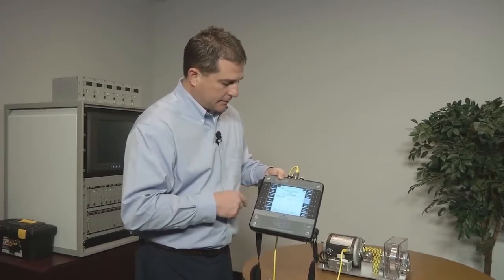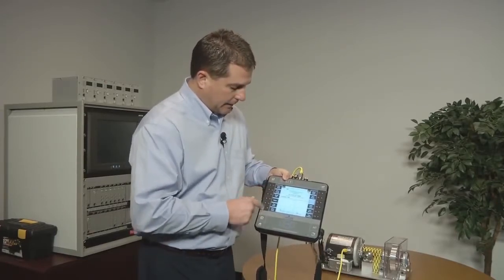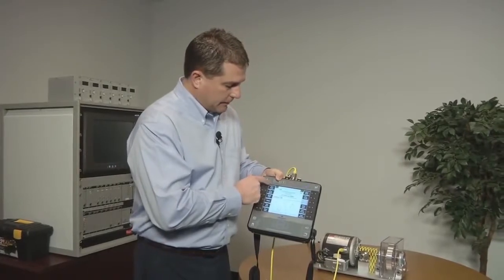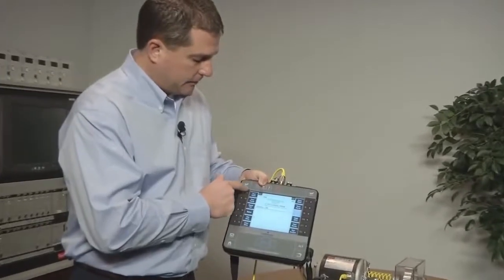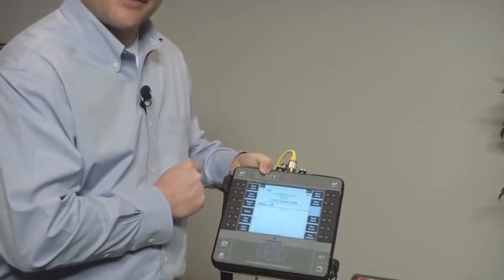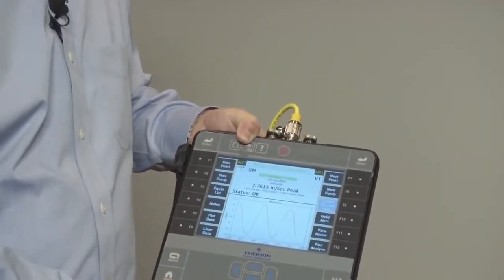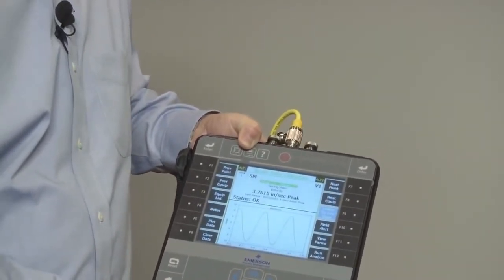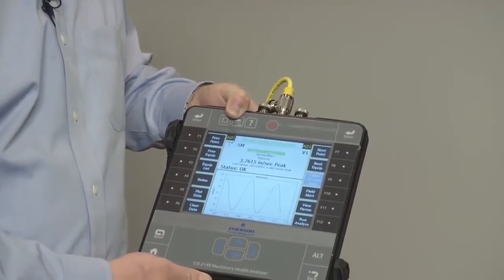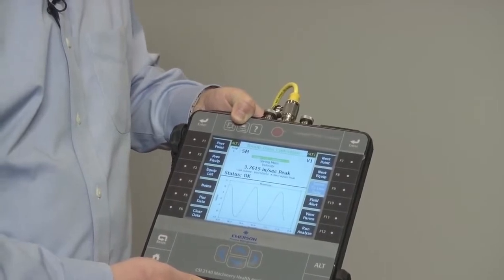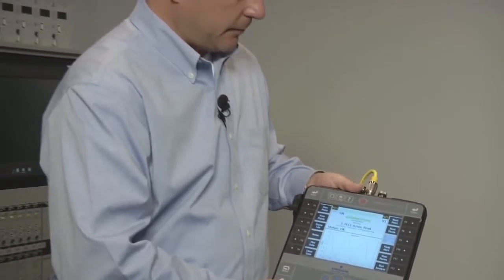So the screen is seven and a half inches diagonal. It is also a touchscreen, and so in order to navigate through these function keys, we still have the keys that you can use if you need to, but you can also navigate with the touchscreen. It makes it much faster to navigate through the menus and go from machine to machine to point to point, and the touchscreen also works with a glove.